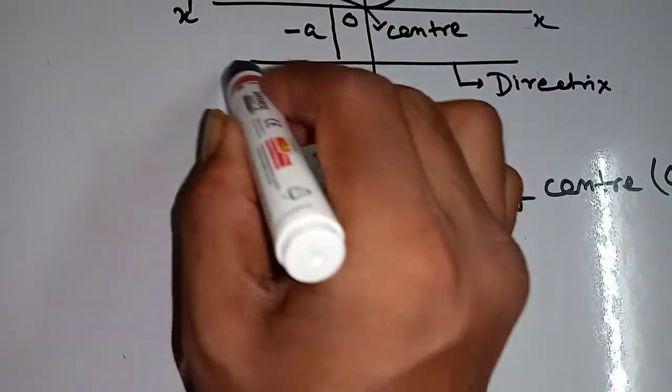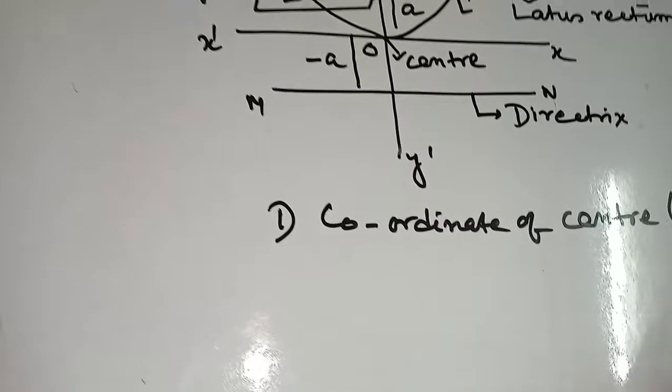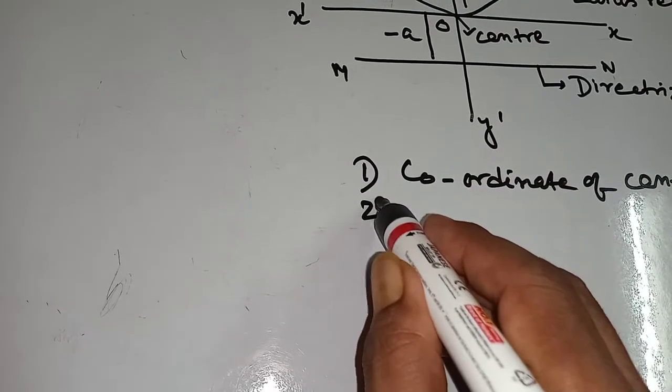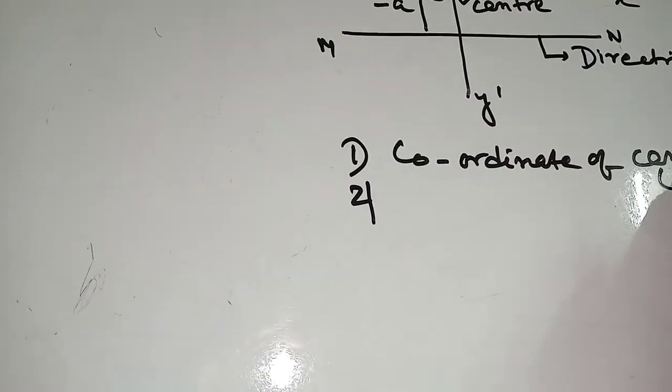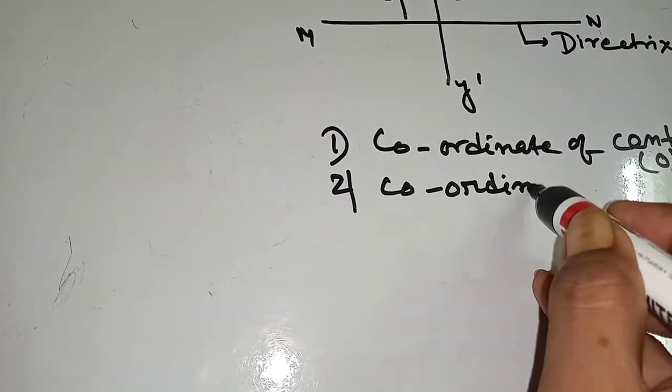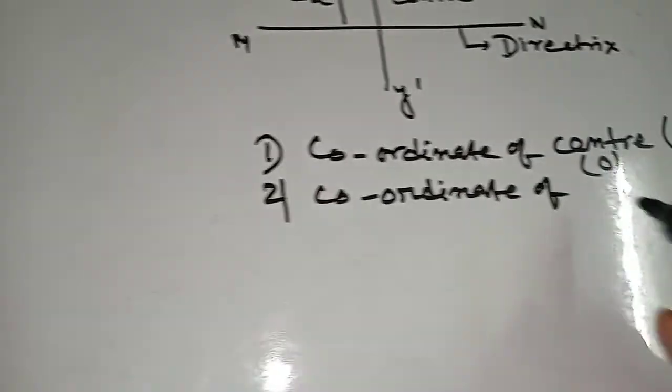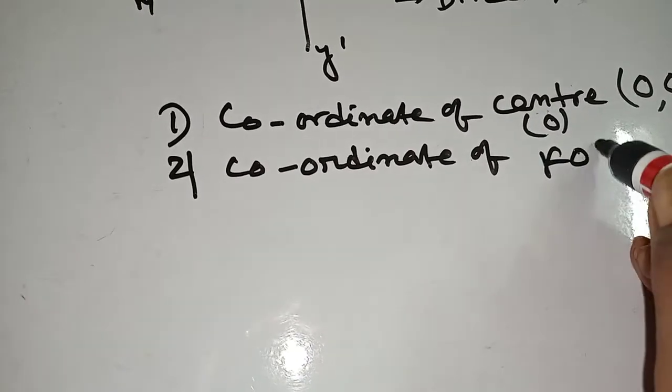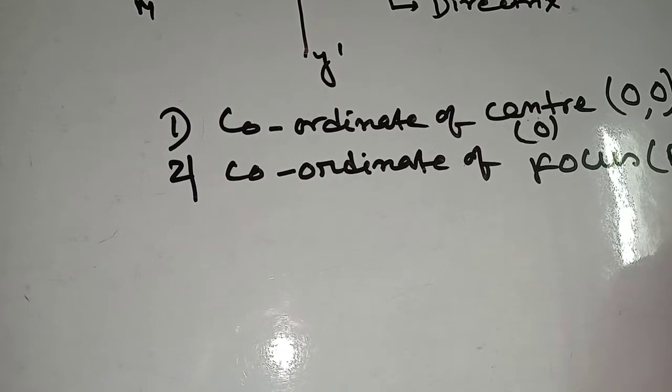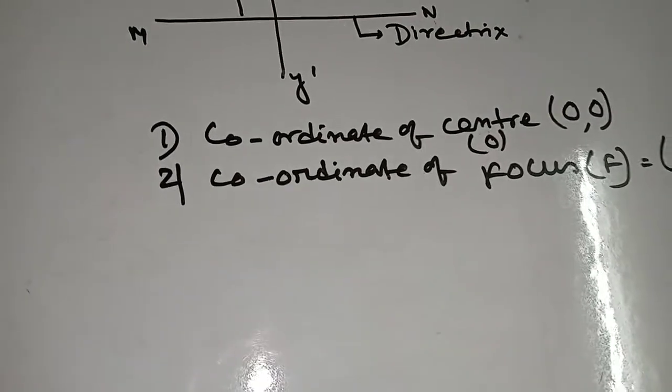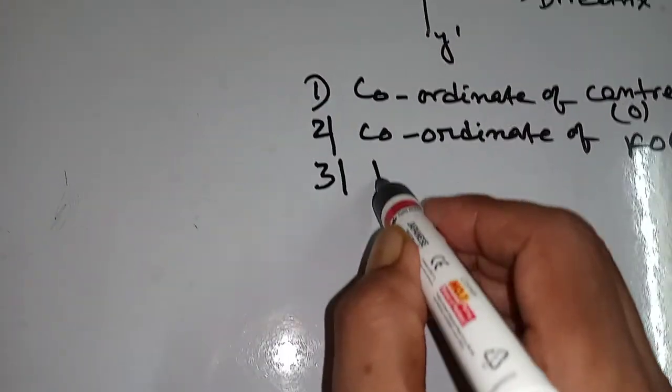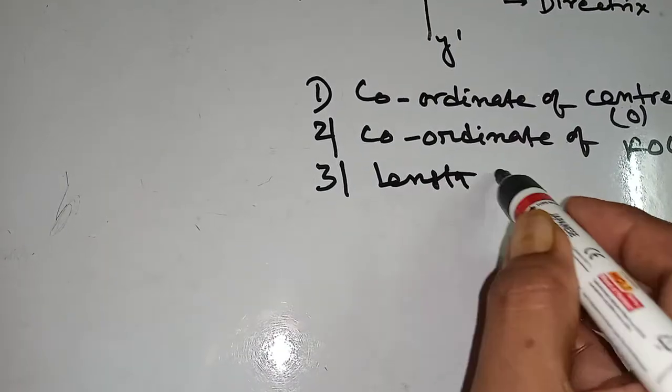Coordinate of center O is 0, 0. Coordinate of focus: 0 comma A.